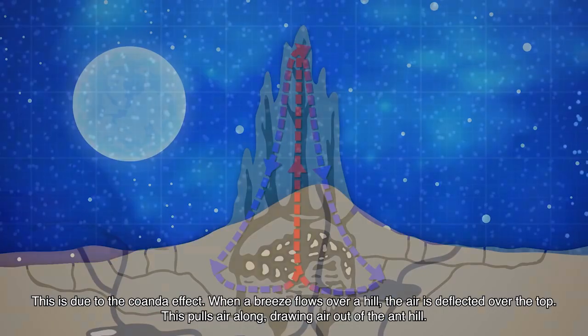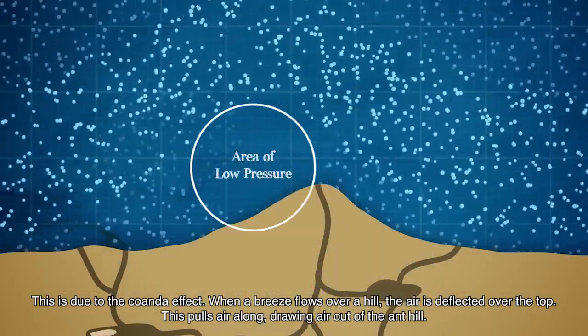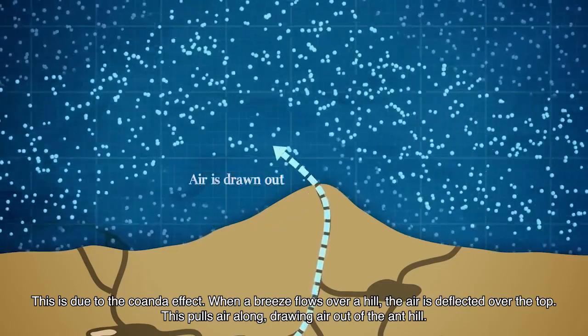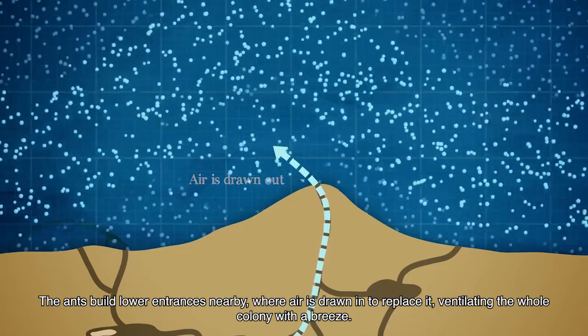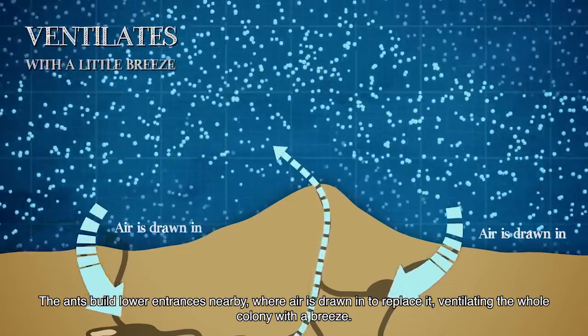This is due to the Coanda effect. When the breeze flows over a hill, the air is deflected over the top. This pulls air along, drawing air out of the anthill. The ants build lower entrances nearby, where air is drawn in to replace it, ventilating the whole colony with a breeze.